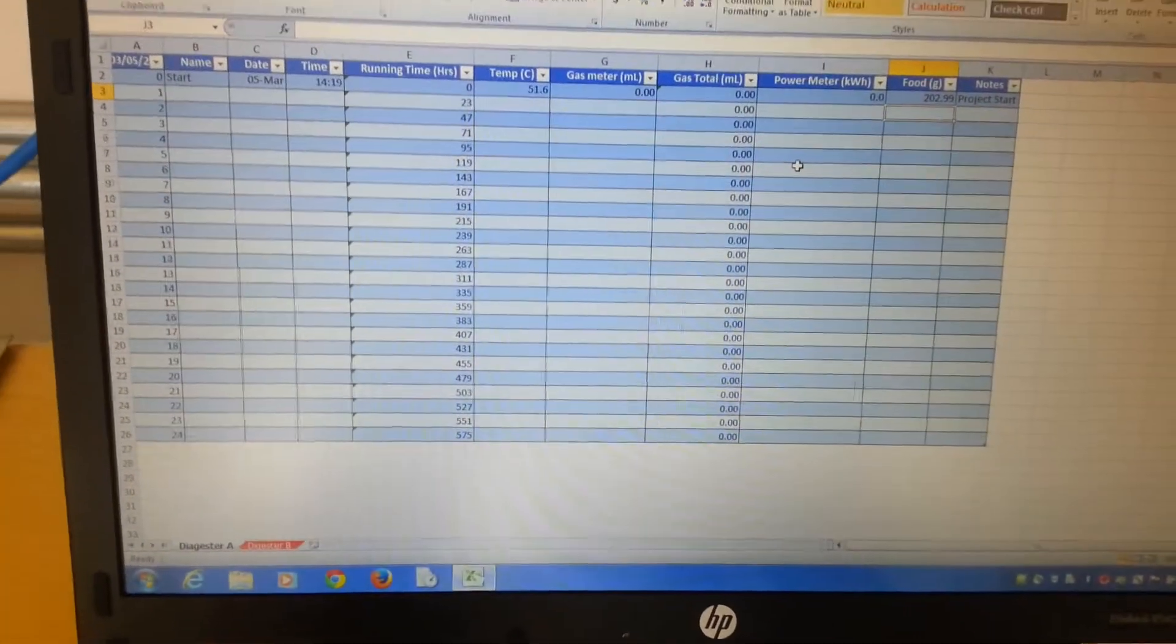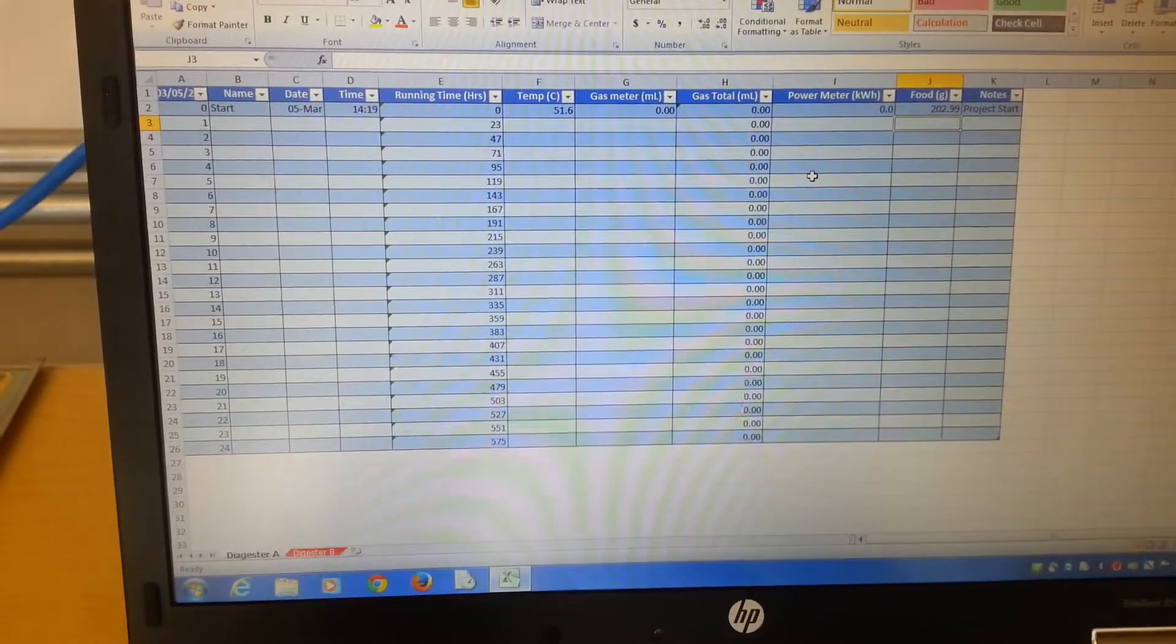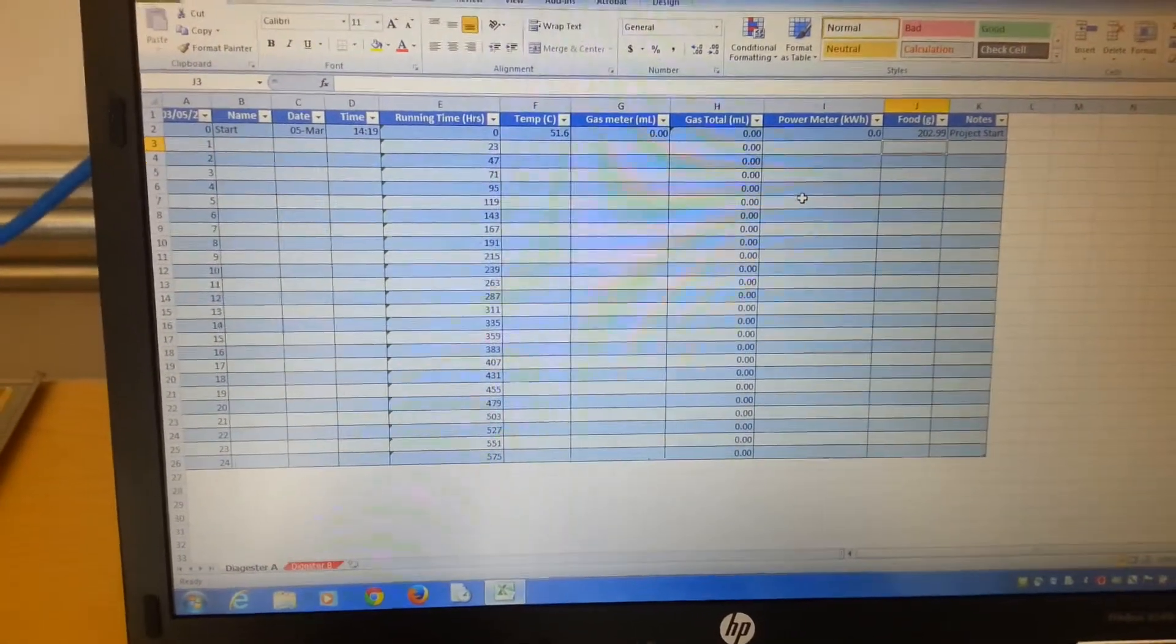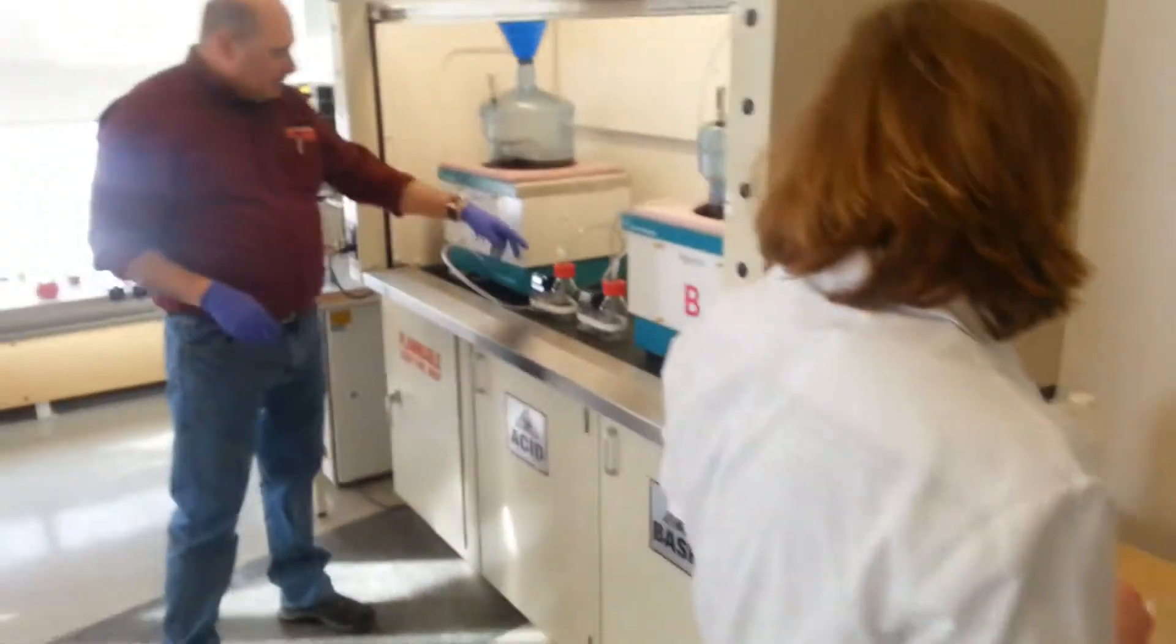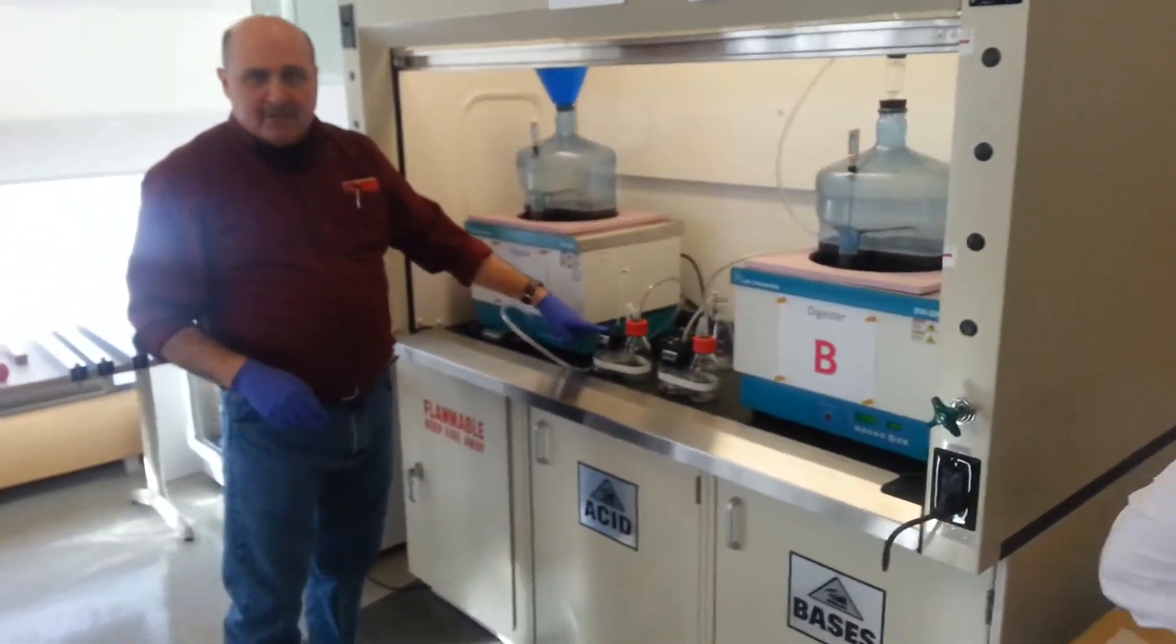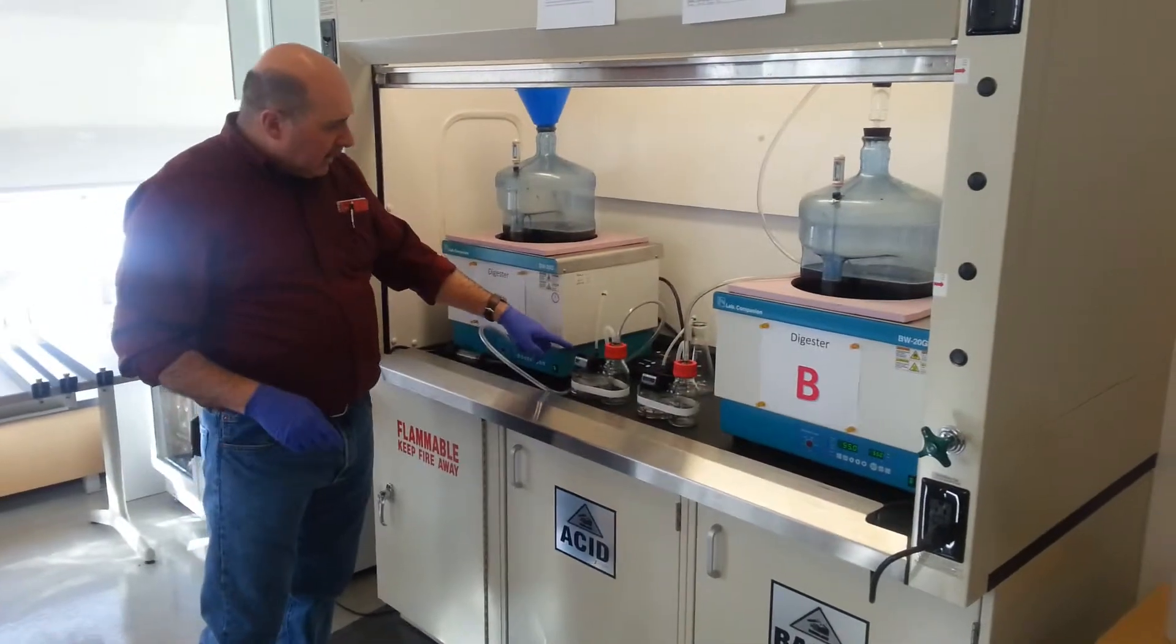The blue sheet is for logger A. The red sheet for logger B. The first measurement we would take would be the gas count. Obviously, we haven't produced any gas yet, so we're at zero.